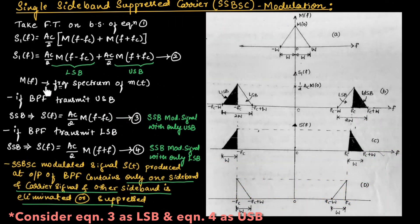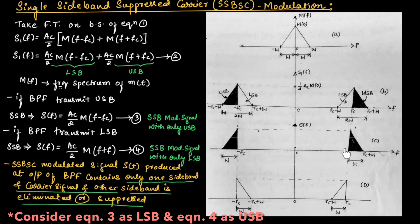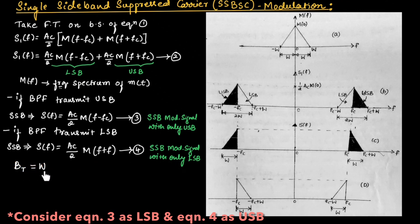In equation number 2, M(F) represents the frequency spectrum of message signal M(t), shown in Figure A with bandwidth 2W. Figure B shows the spectrum of the DSBSC signal with both upper and lower sidebands. Figure C shows the spectrum of the SSB signal with only the upper sideband. Figure D shows the spectrum of the SSB signal with only the lower sideband. The transmitted bandwidth in SSB is equal to W.